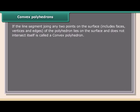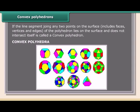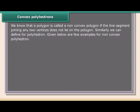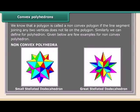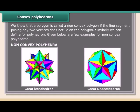A convex polyhedron is one where the line segment joining any two points on its surface lies entirely on the surface and does not intersect itself. A non-convex polygon is one where the line segment joining any two vertices does not lie on the polygon. Examples of non-convex polyhedra include the small stellated dodecahedron, great stellated dodecahedron, great icosahedron, and great dodecahedron.